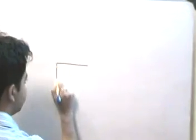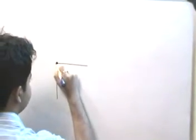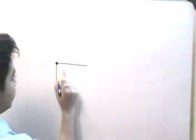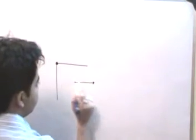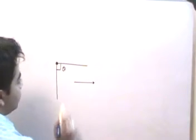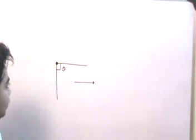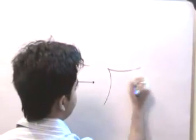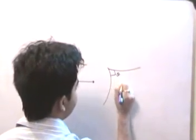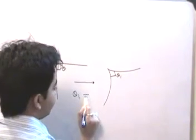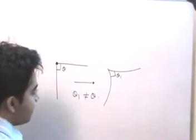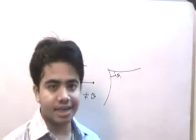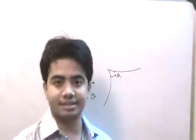For example, let us say that I have a hinge joint like this — this joint is hinged, or pinned. This is my member, and I have another member. If I apply load, the angle between the members, say if it's equal to theta, after application of load it will change to theta one. So theta one is definitely not equal to theta.